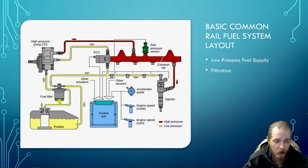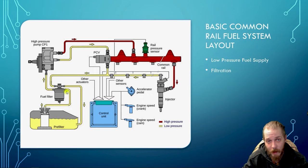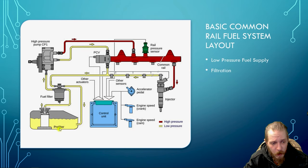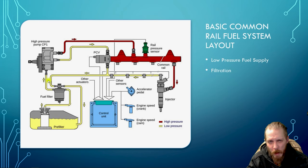Diesel fuel sits on top of water, so the fuel water separator collects water at the bottom. There's a drain screw to remove it, and most modern systems also have a water-in-fuel sensor to alert you when water is present. Honestly, you should be draining it long before that light ever comes on. This system has a pre-filter on the electric pump and a secondary fuel filter or fuel water separator — the primary filters run 8 to 10 micron, secondary around 4 to 8 micron depending on manufacturer.